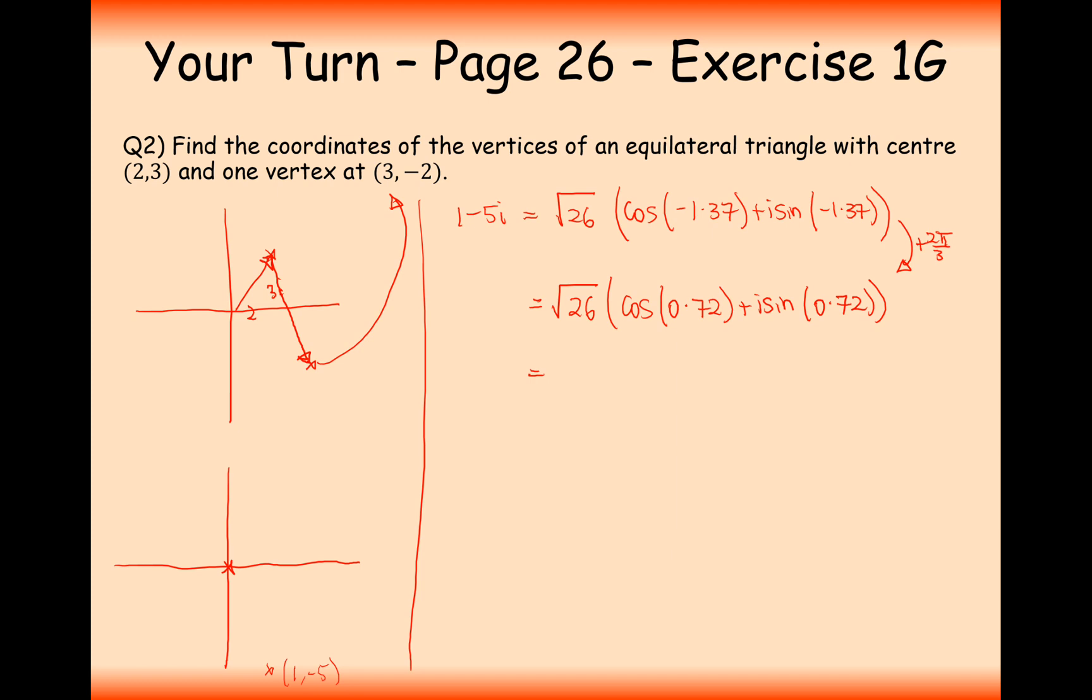So the next one is going to be 0.72 plus i sine 0.72. And that will give us, let's just work that out, 2.82. So √26 bracket cos 2.82 plus i sine 2.82.